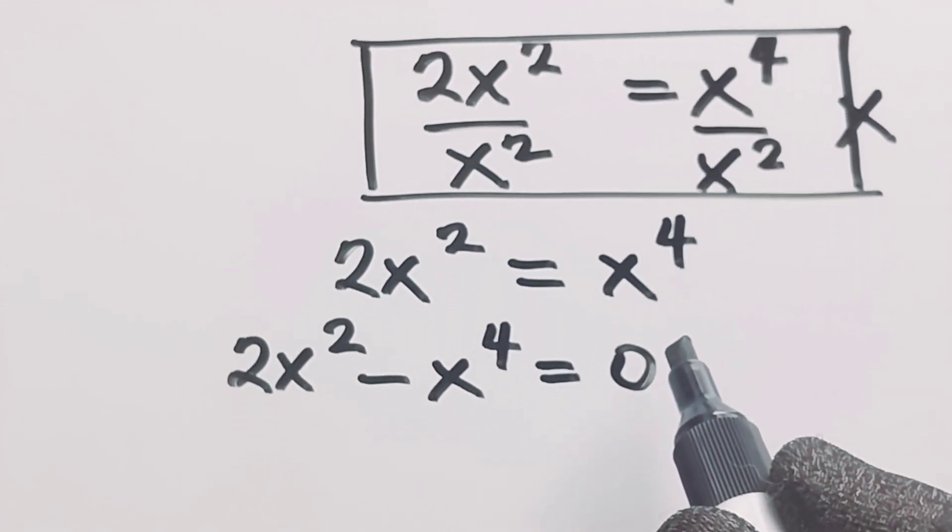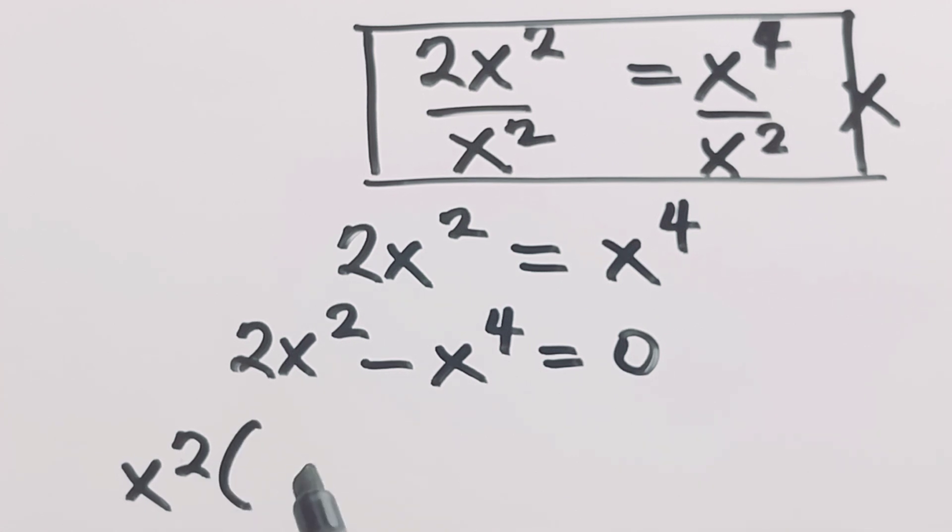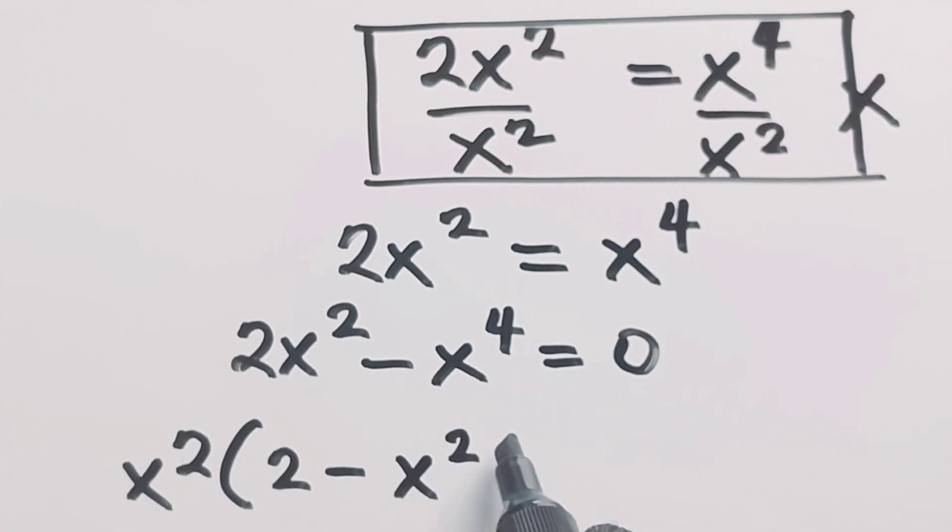And then clearly we can see that x raised to power 2 is common to both terms. So I'll factorize x raised to power 2 out. So in the bracket I have 2 minus x raised to power 2, and x raised to power 2 is equal to 0.